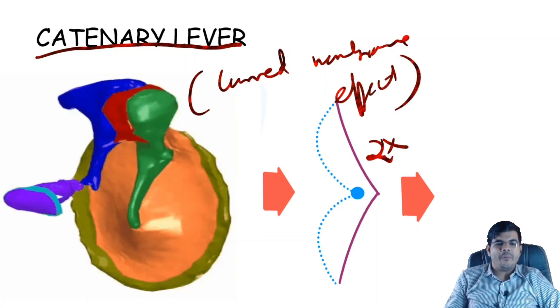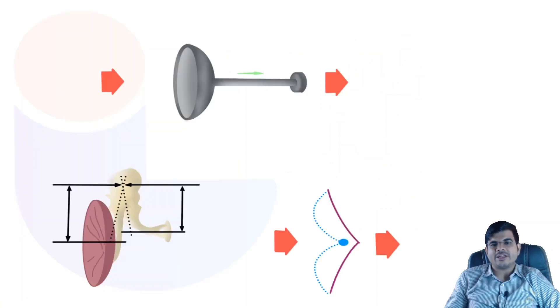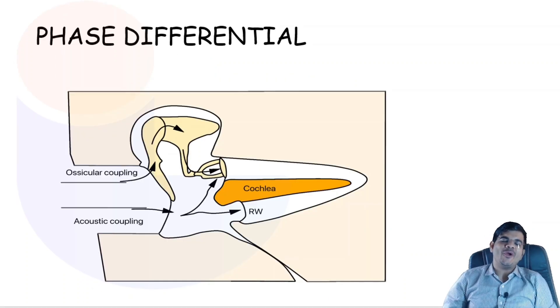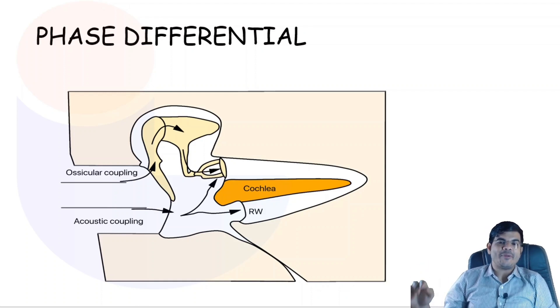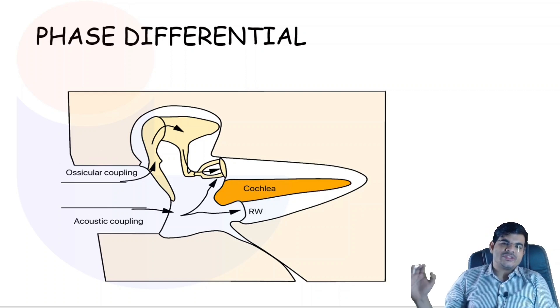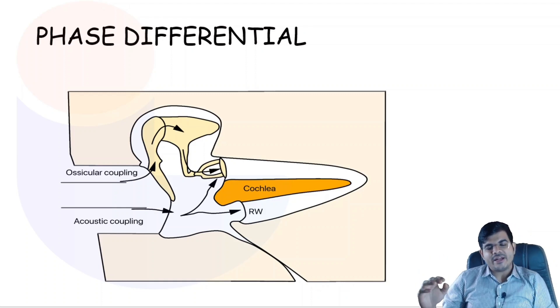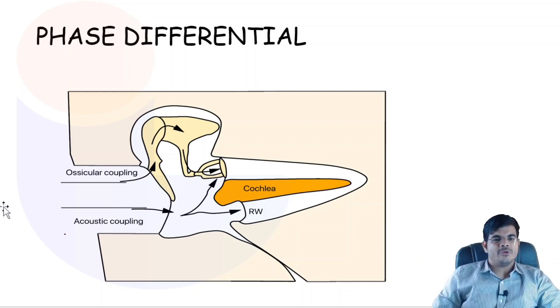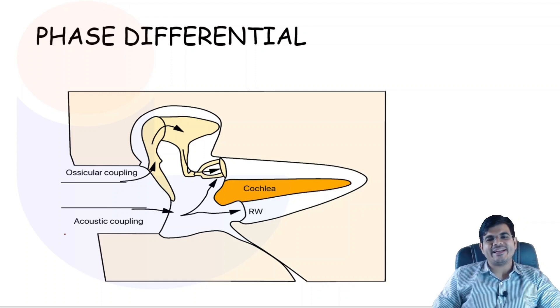So these are the 3 main mechanisms which are involved in the transformer action of middle ear. Apart from the transformer action, there is another mechanism being provided within the middle ear that helps in efficient energy transmission and that is the phase differential. Sound waves do not reach the oval window and the round window simultaneously. There is a preferential pathway for the sound waves to reach the oval window through the ossicular chain, and this is called ossicular coupling. It ensures that when sound waves are at a phase of compression in the oval window, it will be at a phase of rarefaction at the round window and there is no phase cancellation occurring. Because of this, there is efficient transmission of energy.